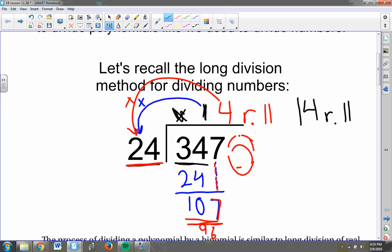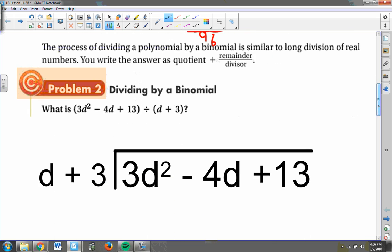14 with a remainder of 11. When I run out of stuff to pull down, that's what my remainder is, what I got when I subtracted those two numbers. So that's the process that we're going to go through when we divide polynomials as well. Hopefully it makes sense. You should be able to see the transition very well from here to this type of problem.